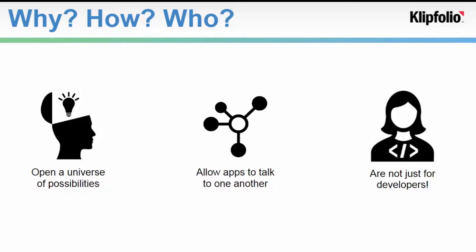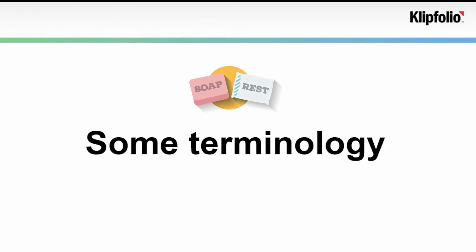Now, to get started with a particular API, you'll want to get your hands on that API's documentation. So let's go over some of the common terminology that you will come across when reading API docs. By the way, there are different types of APIs, including SOAP and REST. In this video, I'll only be covering information on REST APIs.